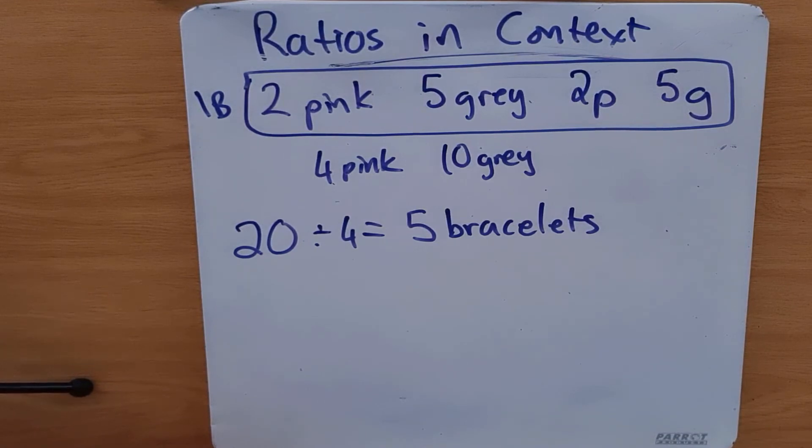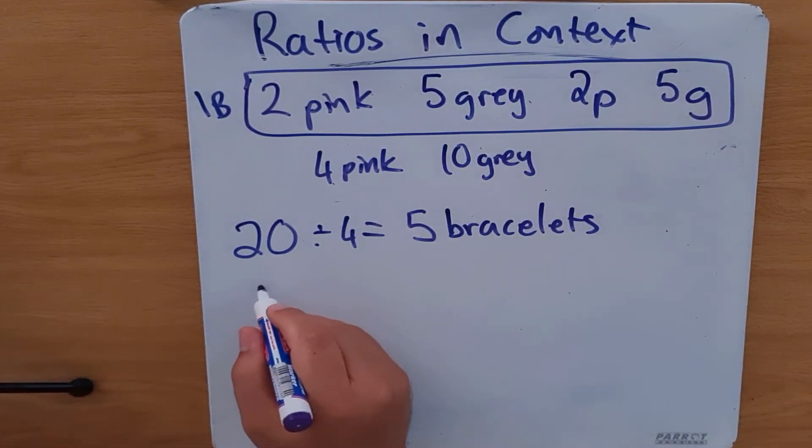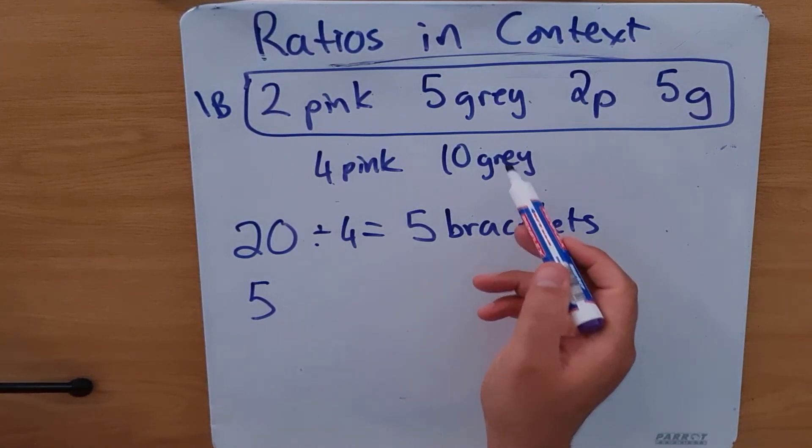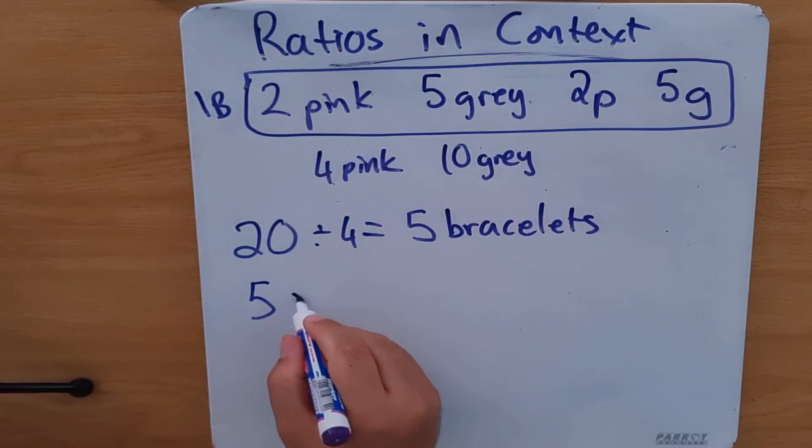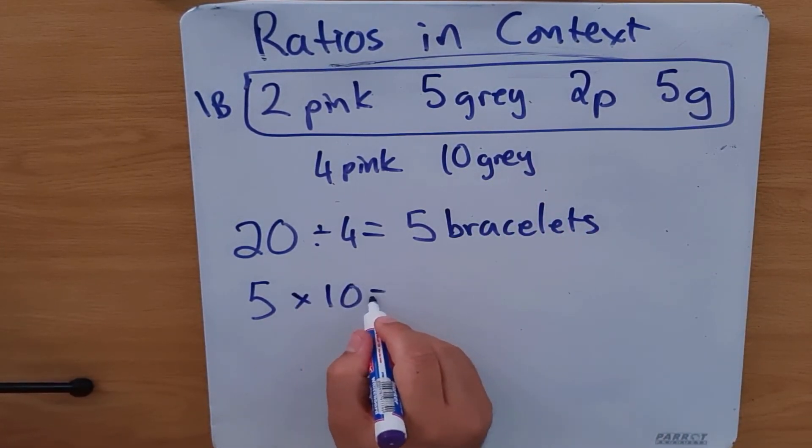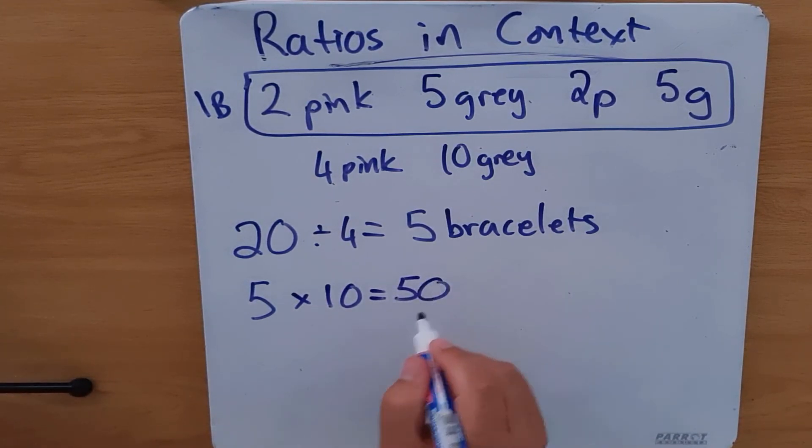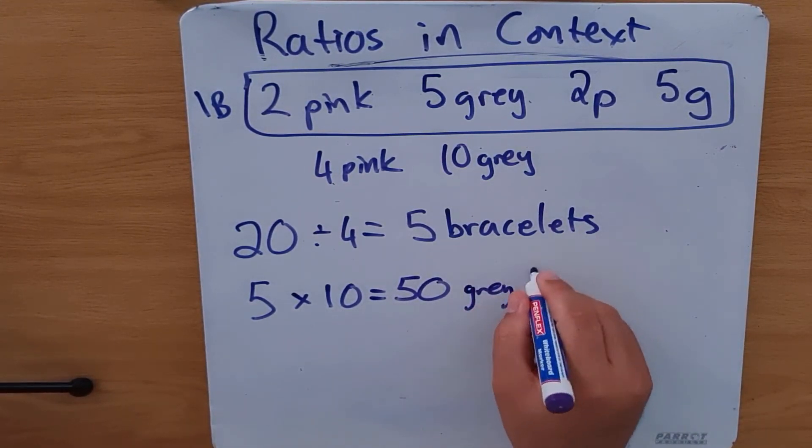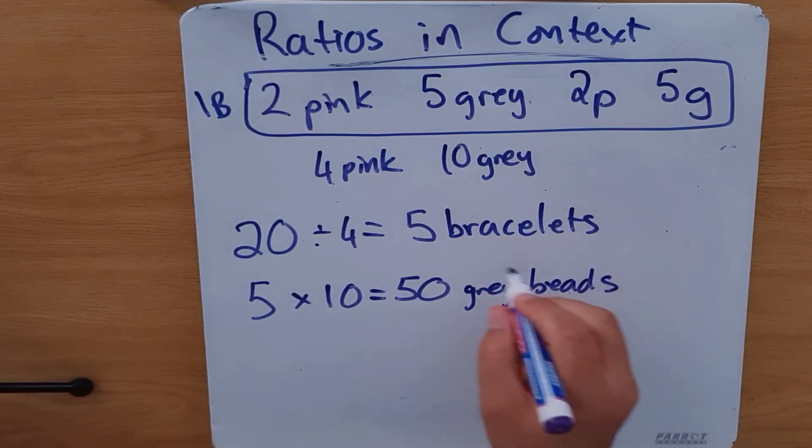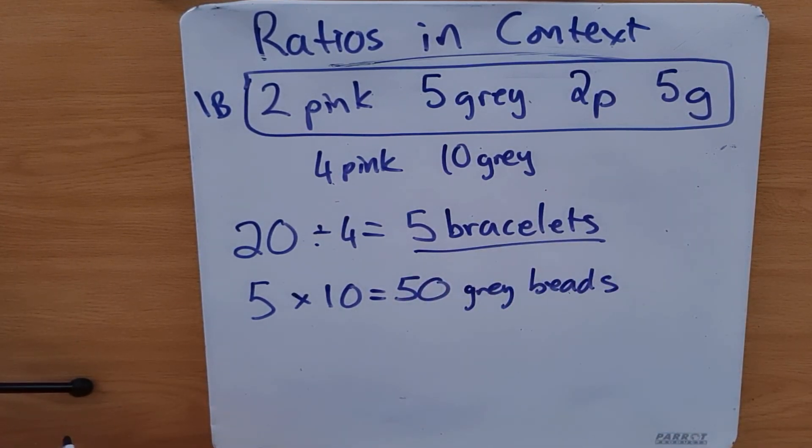What are we going to do? We now know how many bracelets, how many gray beads per bracelet: 10. And now we know she will need 50 gray beads to make up five bracelets.